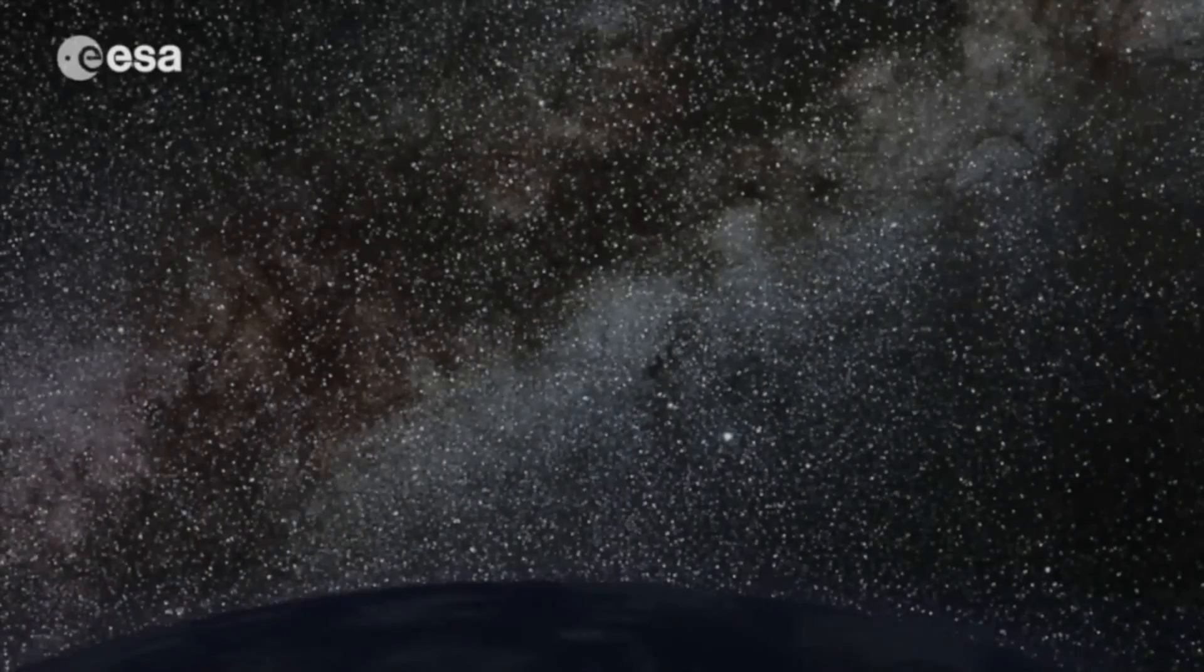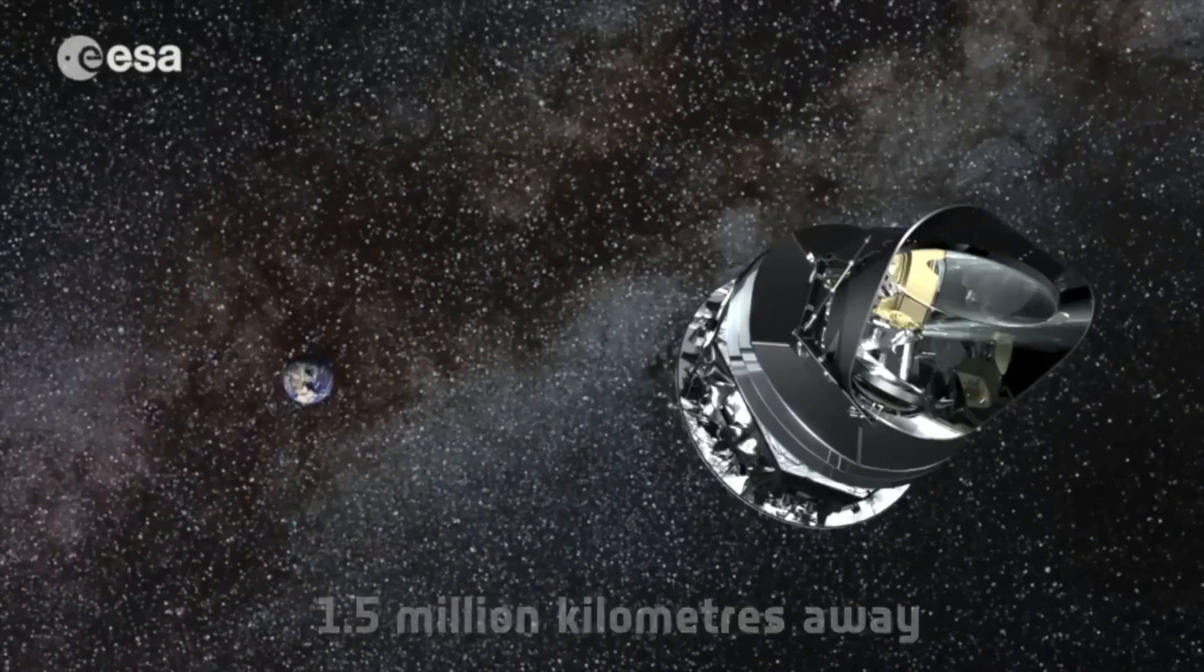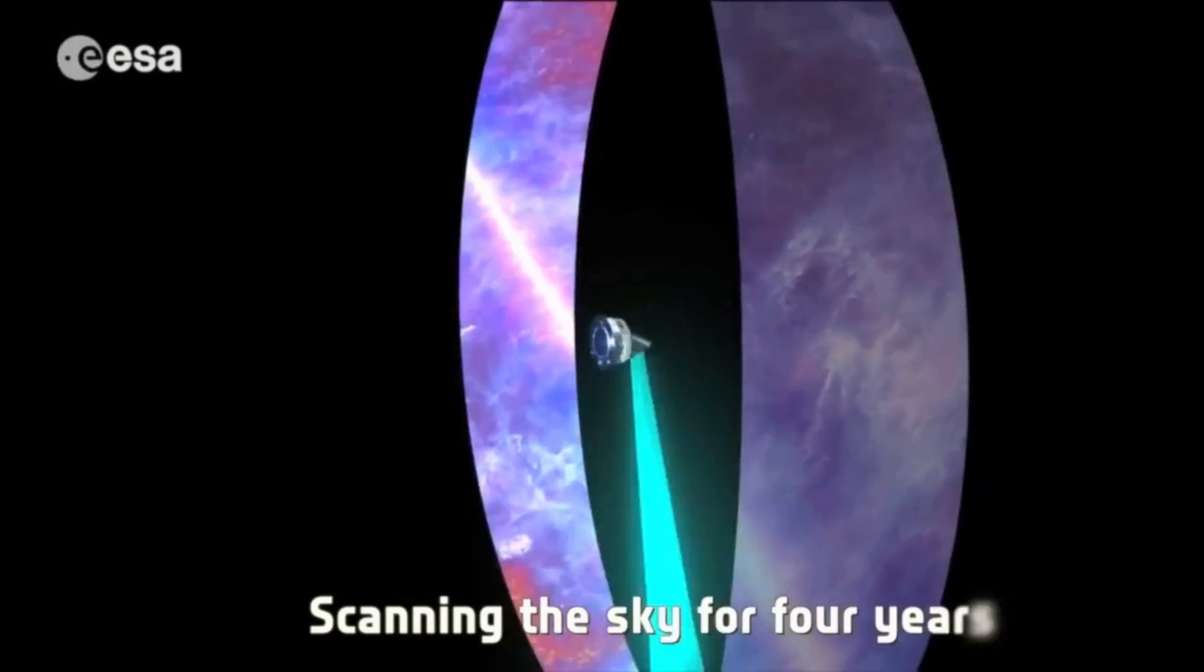And at that point, the universe became transparent, and that light has been travelling through the universe ever since. And we have a satellite up at the moment called Planck, it's a European satellite, that's been taking detailed pictures of this light.